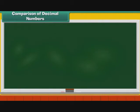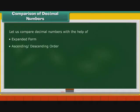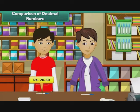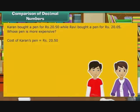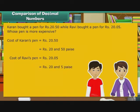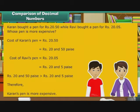To understand decimals better, we now compare decimal numbers with the help of expanded form, ascending and descending order. Let us look at some examples. Karan bought a pen for Rs. 20.50, while Ravi bought a pen for Rs. 20.05. Whose pen is more expensive? The cost of Karan's pen is Rs. 20.50 and the cost of Ravi's pen is Rs. 20.05. Rs. 20.50 is greater than Rs. 20.05. Therefore, Karan's pen is more expensive.